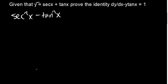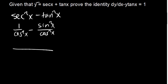You can say that sec squared x is the same as 1 over cos squared x, and tan squared x is the same as sin squared x over cos squared x. Finding a common denominator of cos squared x: cos squared x into cos squared x gives 1, so 1 times 1 gives 1, minus sin squared x over cos squared x.